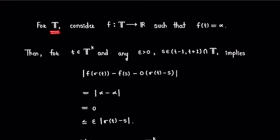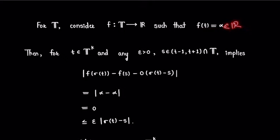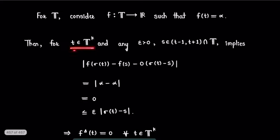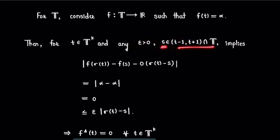Let us consider a time scale T and a function f defined from T to R such that f takes the value alpha for every t in the time scale, that is f(t) = α where alpha is some real number. Now for a point t belonging to T^k and any ε > 0, we will consider a neighborhood of t and a point s in this neighborhood.